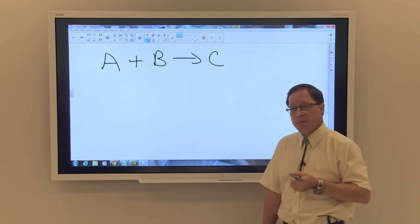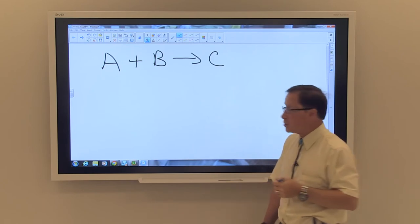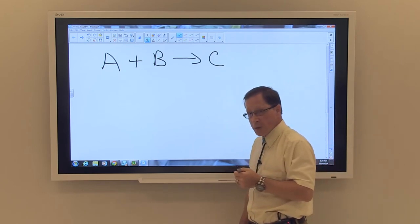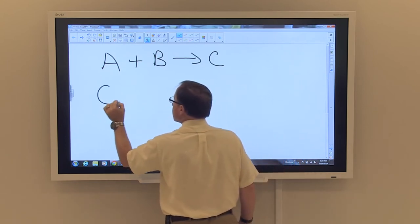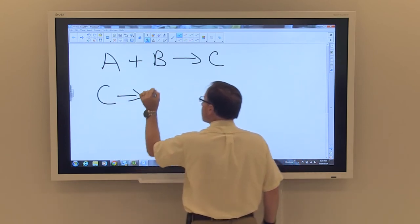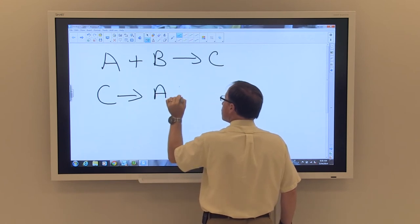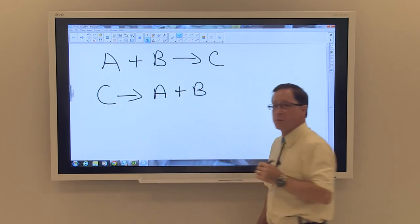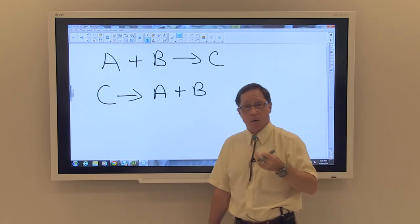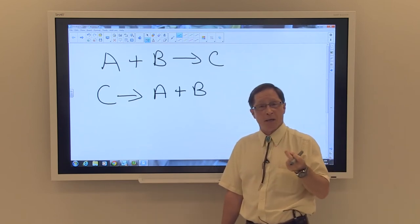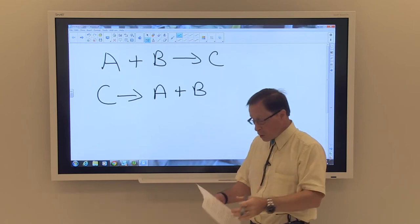The reverse of a combination reaction is decomposition. The decomposition reaction would be C giving A plus B. In other words, a product or a material that's breaking down into individual chemicals.